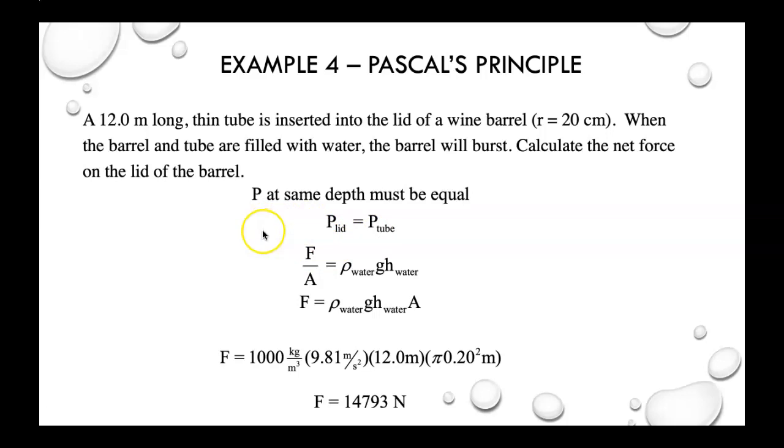So on the lid, the pressure is F over A, and the pressure in the tube is, as we found out in the last class, pressure is rho g h. So that's another way to put your whole force over area can be converted into rho g h. So that will be the pressure in the tube. You've got the density of water, gravity, height of the water, and the area. You fill everything in, and you see that it didn't seem like much, but that long thin tube gave a force of 14793 newtons. So again, that's hydraulics.